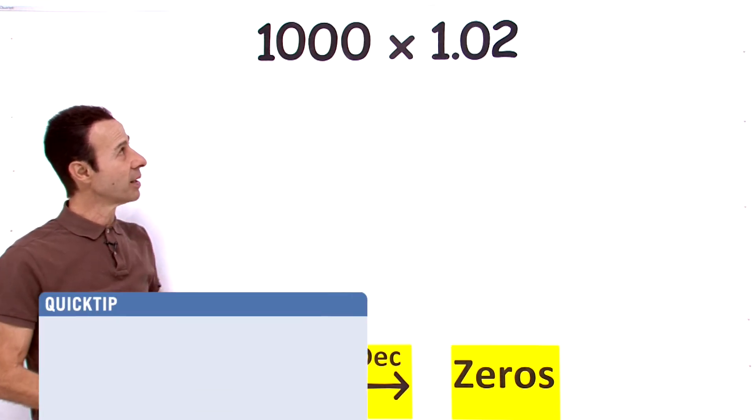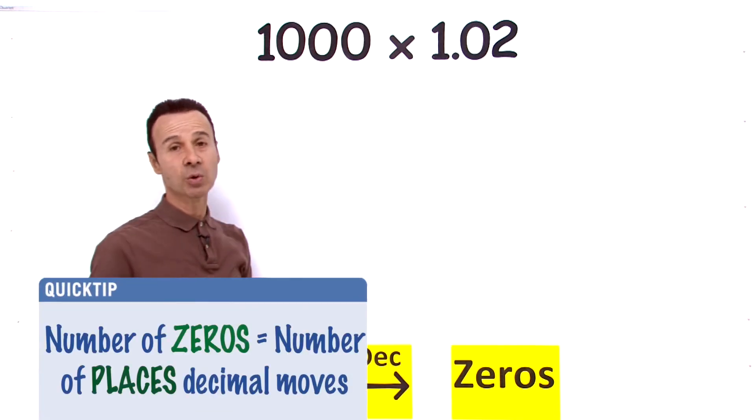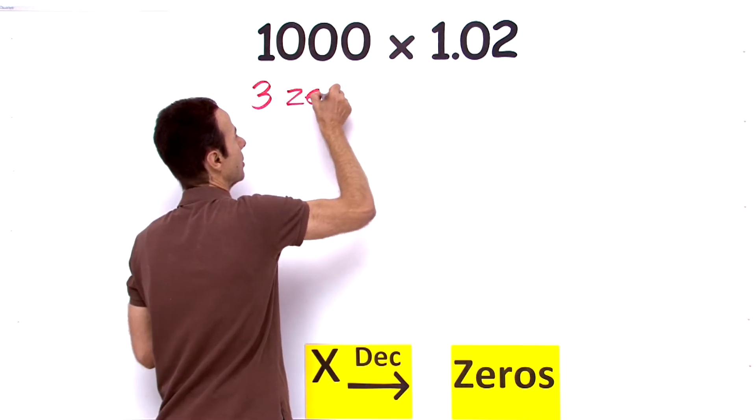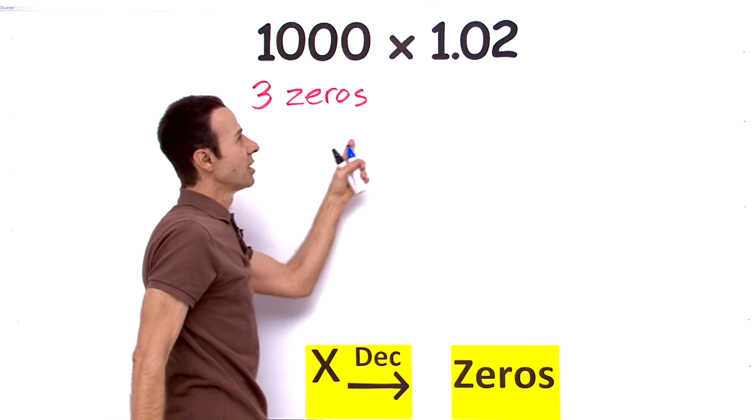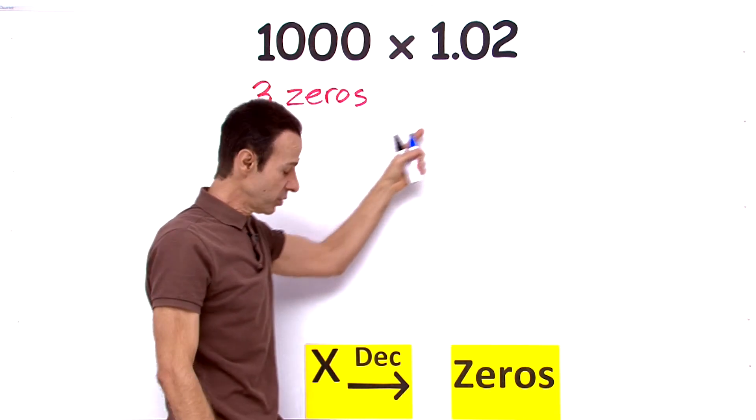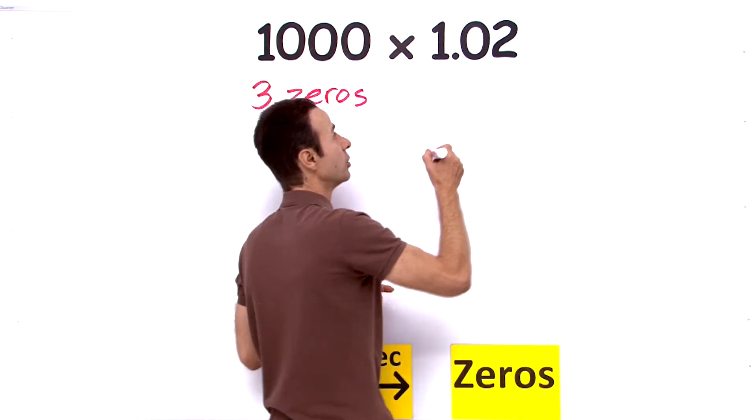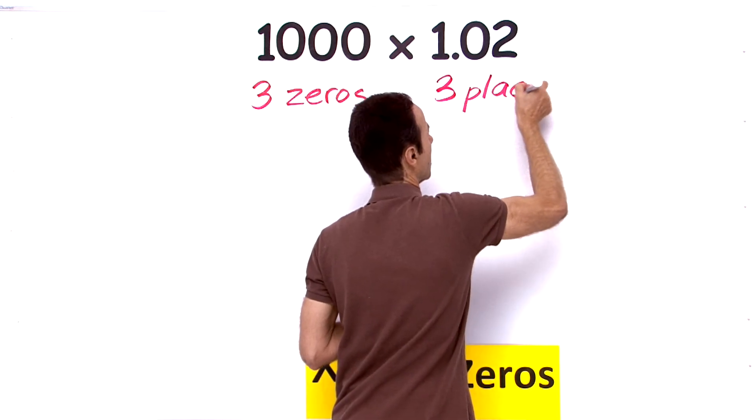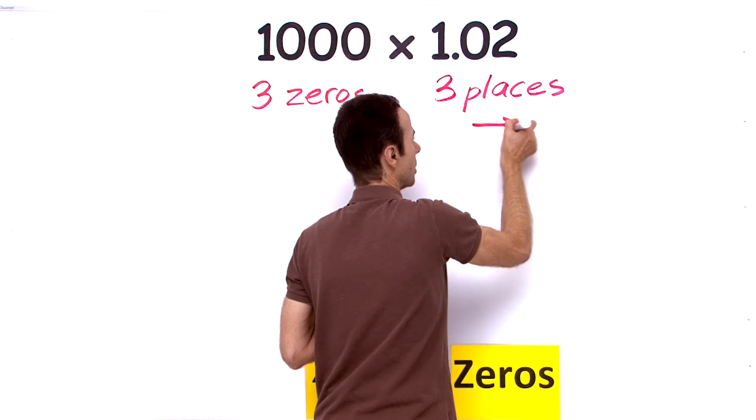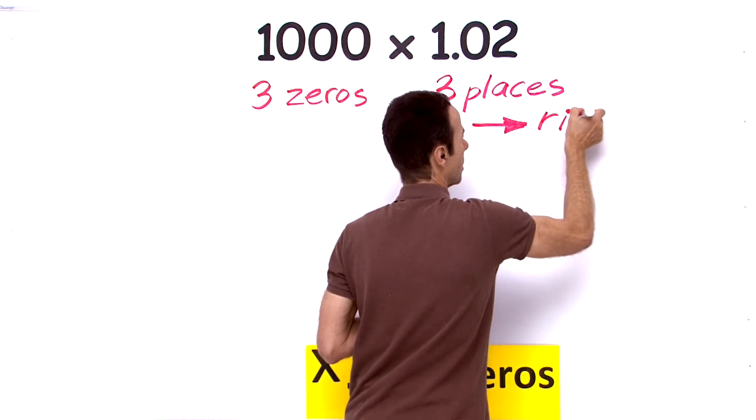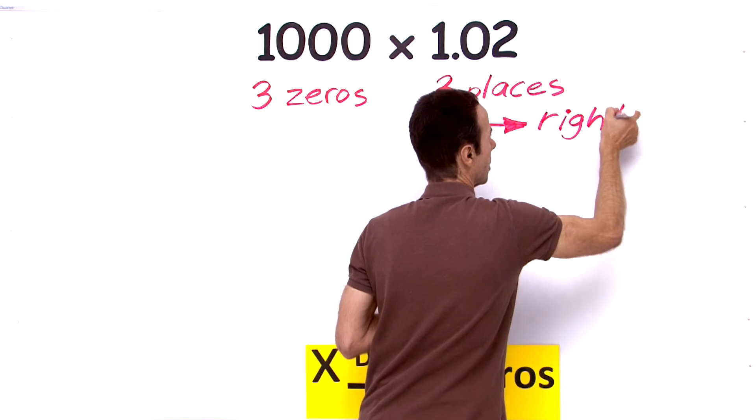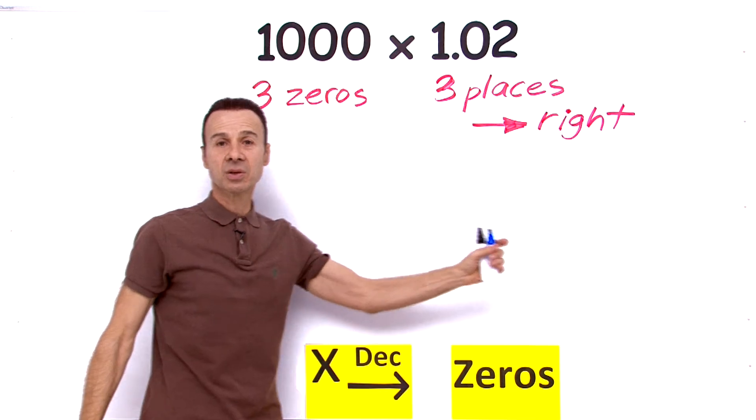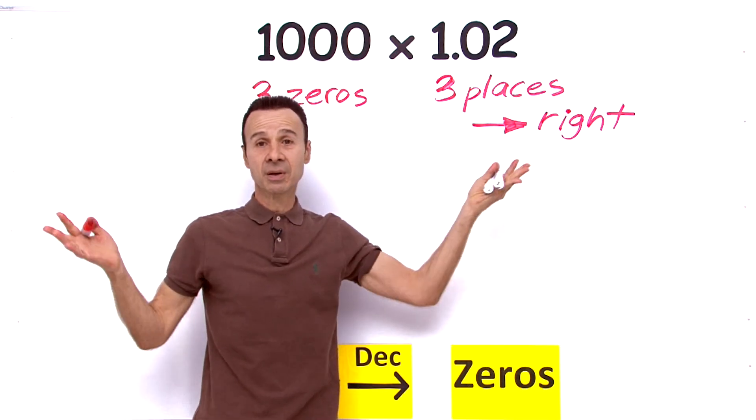So let's have a look here. How many zeros do we have in 1000? Well, we have three zeros. So if we have three zeros, that means the decimal place will move three places to the right because we are multiplying. So three zeros, three places to the right. That is pretty easy, isn't it?